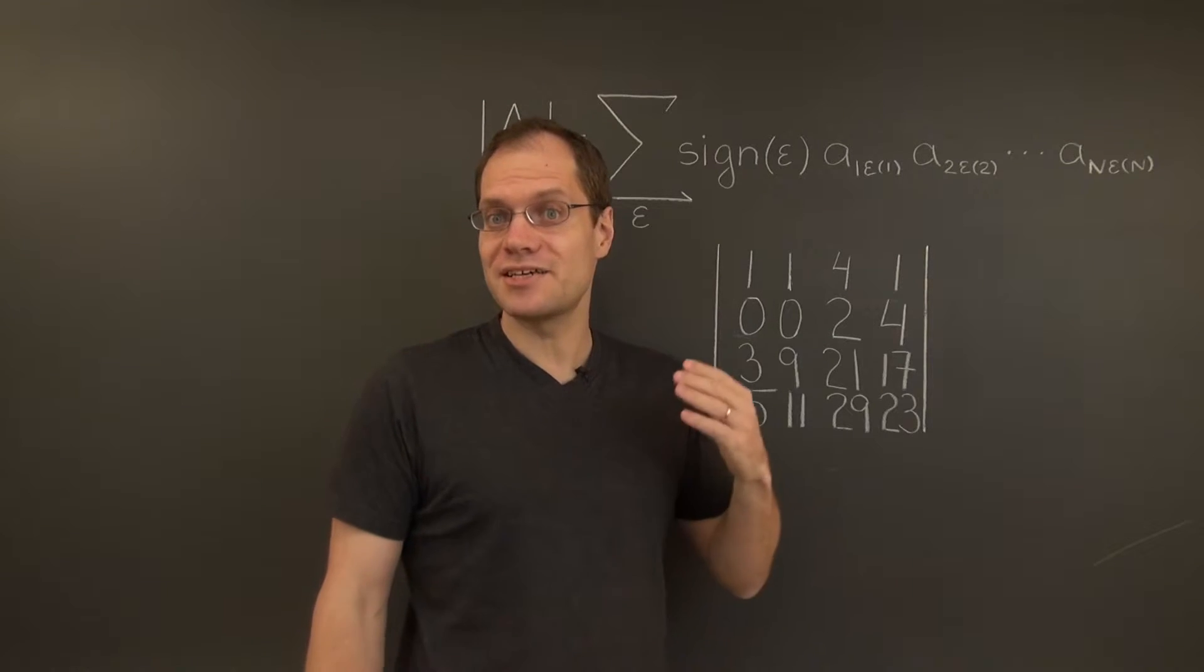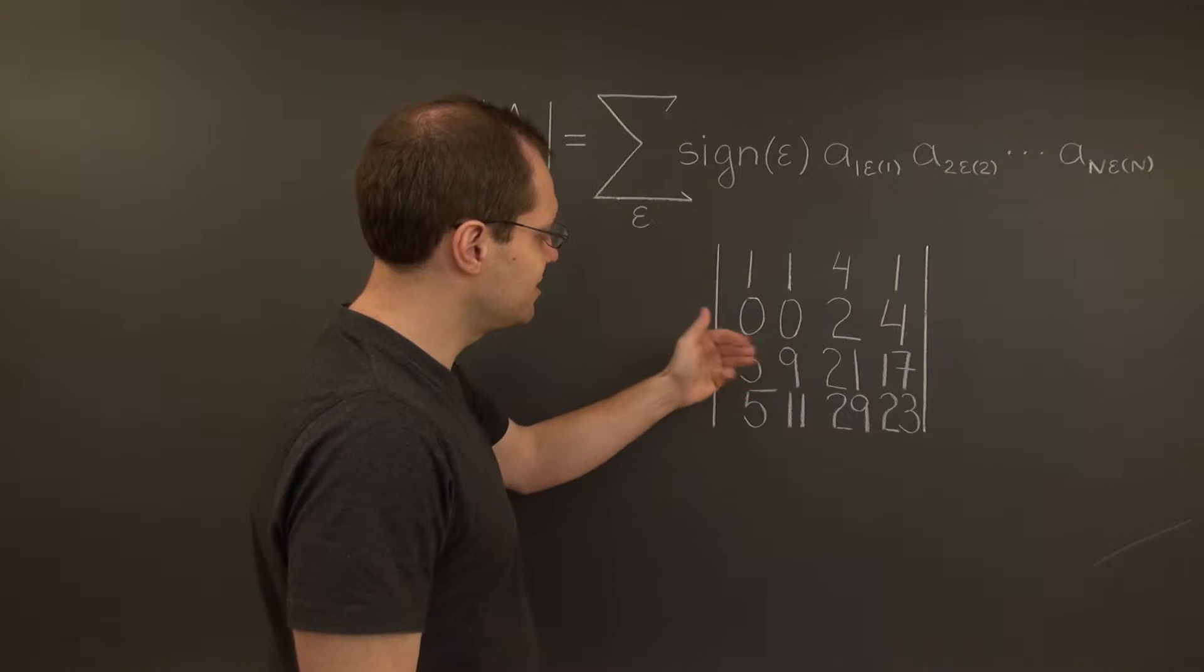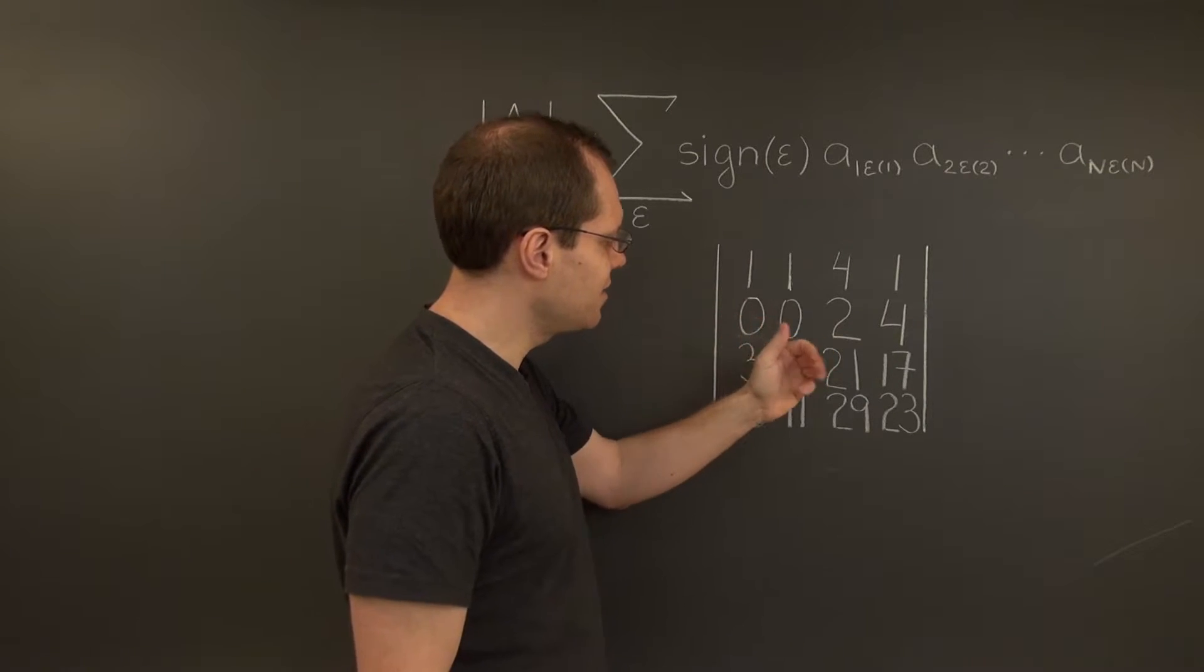The next step is subtracting 3 of the first row from the third, and we end up with 0, 6, 9, 14.